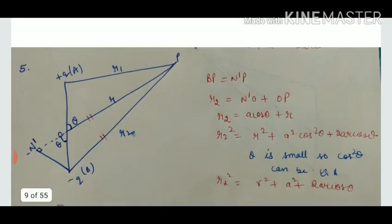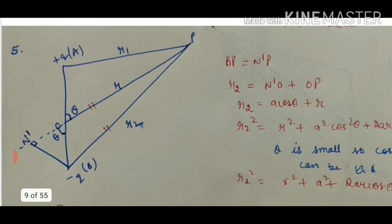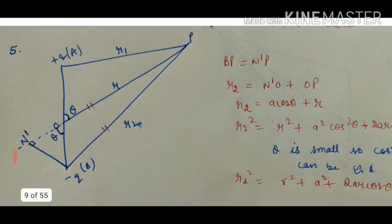So this was about R1 square. Similarly, how to find R2? I have extended this OP up to a point N dash. I have drawn a perpendicular from B to this line OP after extension and that perpendicular is BN dash. Now both these lengths will be equal. BP will be equal to N dash P. N dash P can be broken as N dash O plus OP.